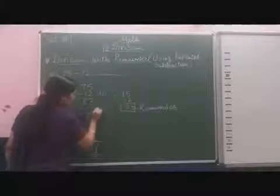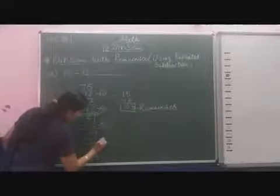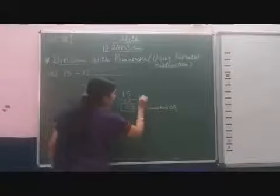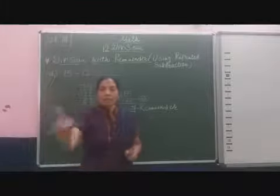Now see how many times I have subtracted 12. Here the 1 time, 2nd time, 3rd time, 4th time, 5th time and this is 6 times. So that means I distribute chocolates among 12 students.